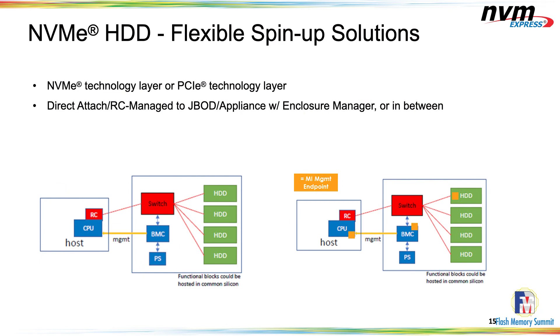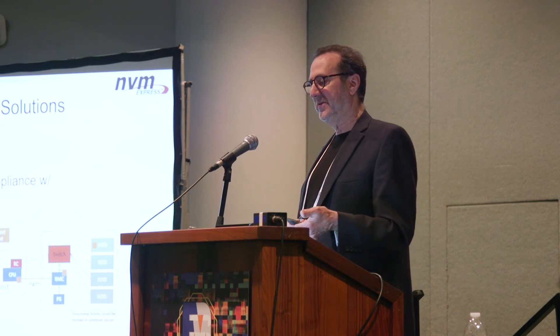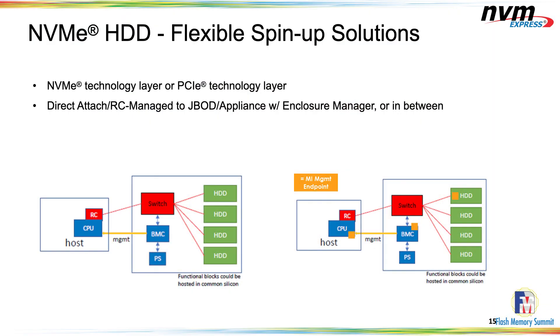We want some kind of staggered spin-up solution. NVMe and PCIe environments really haven't had to deal with rotating media devices — PCIe endpoints are not rotating media. So we want solutions that work at the PCIe link layer in certain topologies — from direct-attach up to sophisticated JBODs or more expanded topologies where you need an enclosure manager and a more sophisticated protocol. We've outlined a few solutions: a native PCIe link layer solution based on power management work done by the SIG last year, and an NVMe MI solution that will require a couple of extensions to MI — but they're not massive. That's our quick overview.